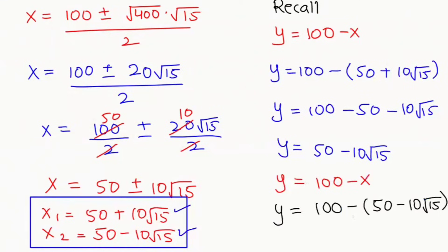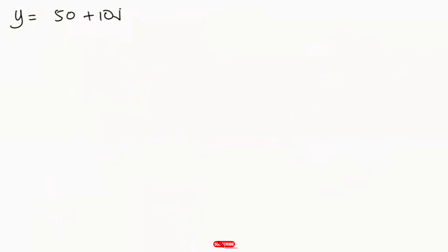Now plugging in the second value x₂, which is 50 minus 10 root 15: y equals 100 minus (50 minus 10 root 15), which equals 100 minus 50 plus 10 root 15, and this gives y equals 50 plus 10 root 15.